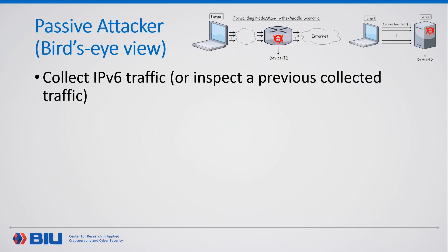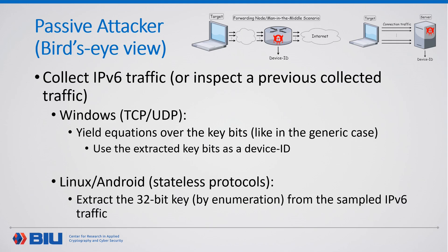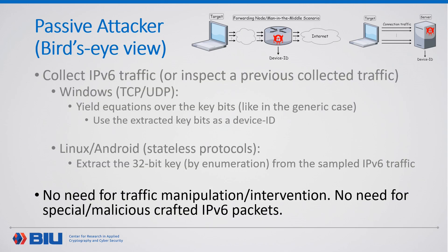From the bird's eye view, how does this attack work? The attacker begins by collecting or inspecting previously collected IPv6 traffic. For Windows, the attacker yields equations on the key bits that exploit the linearity of the Toeplitz hash to generate a device ID, similarly to the generic case in the active attacker model. For Linux and Android, the attacker does the same as in the active attacker model — enumerate over the key and use it as a device ID. There is no need to manipulate or intervene with the client's traffic, and no need to cause the device to emit specific crafted packets. This means that any forwarding node aware of the source address, destination address, source port, and destination port values, and capable of dumping these packets, is able to generate a device ID and correlate the user's traffic.